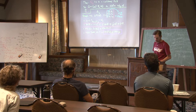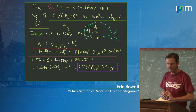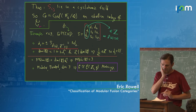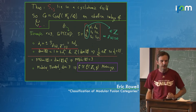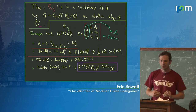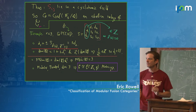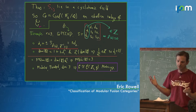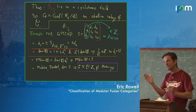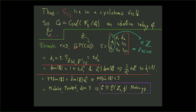So the S_{ij} entries live in a cyclotomic field with this abelian subgroup. Let's see how we use this to classify. Let's take a specific example: rank 3. In rank 3, we're looking at abelian subgroups of S_3. Suppose the Galois group is the abelian subgroup generated by the transposition (1 2), isomorphic to Z/2Z.